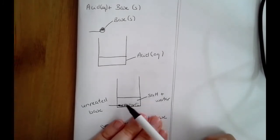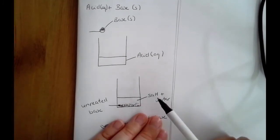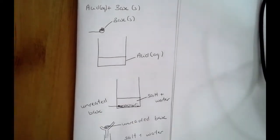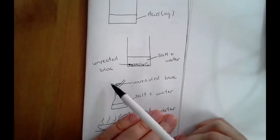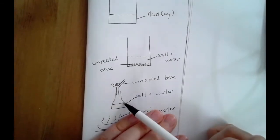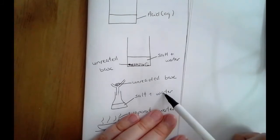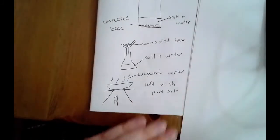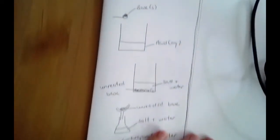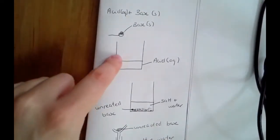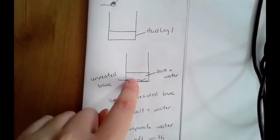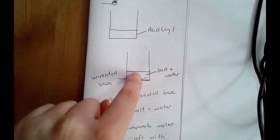The aim is to get a pure salt. At this point you've got salt, water, and unreacted solid base, so you need to separate them. First, remove the unreacted base using filtration — it's a solid, so it stays in the filter funnel while the salt and water pass through. Then heat the solution to evaporate some of the water and leave the salt to crystallize.